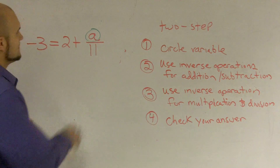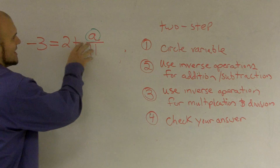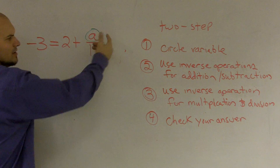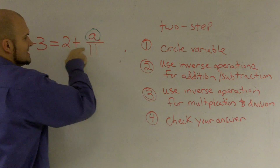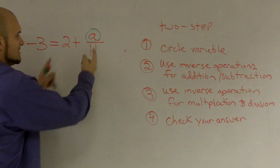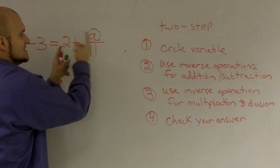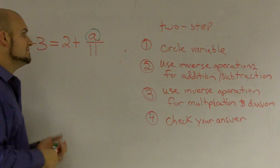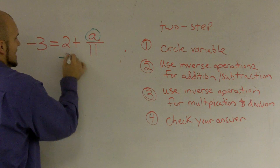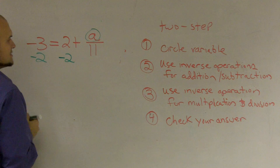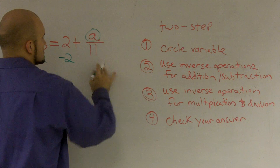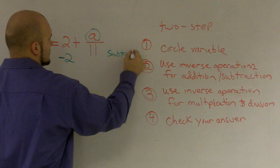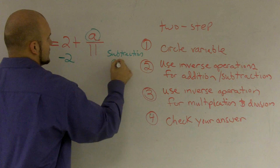So I look at this problem and I say: I have a 2 that is actually being added to my a. You might say it looks like a over 11 is added to the 2, which is correct, but if I rearrange and put my variable in front, I would still be adding that 2. So I need to use the inverse operation, which is going to be subtract 2 — subtract 2 from both sides. Therefore, I'm going to use the subtraction property of equality.